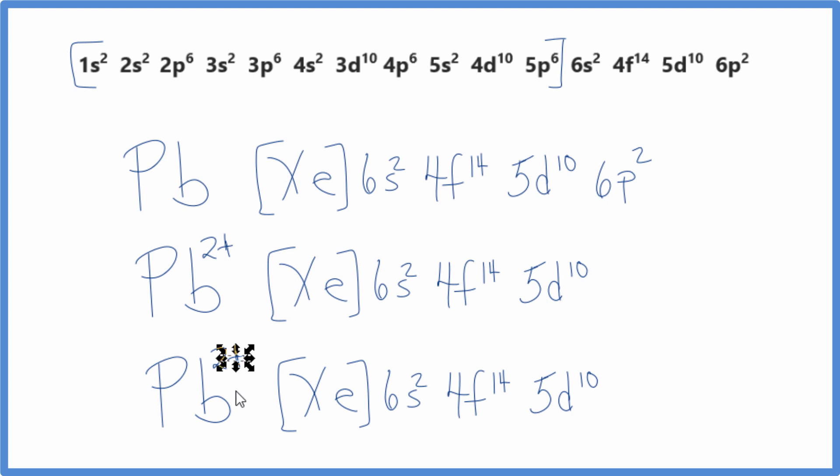For Pb4+, we're going to end up losing two more electrons. But the question is, which ones do we lose? We're going to lose the valence electrons, the electrons in the highest energy level, that sixth energy level. So these are the two that we will lose.